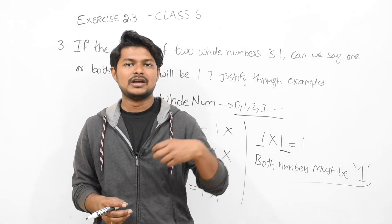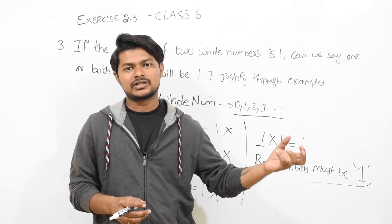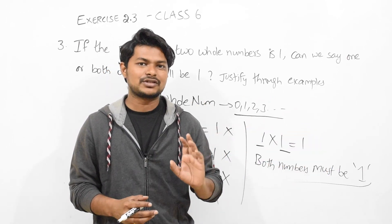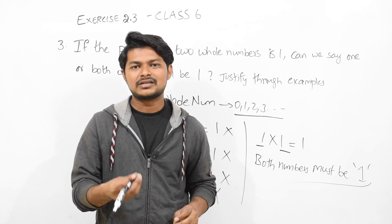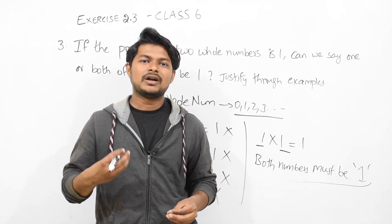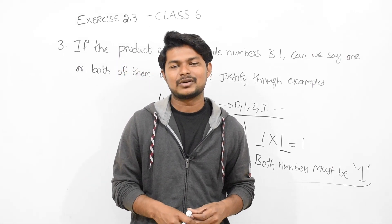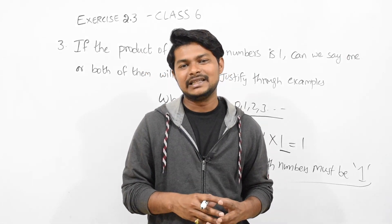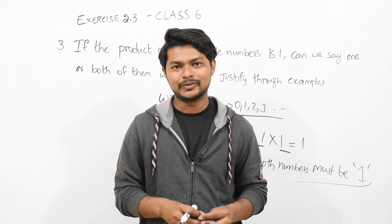In only one case, that is 1 into 1 equal to 1, in this case only it is true, remaining all cases it is false. So if the product of two whole numbers is 1, can we say one or both numbers will be 1? Here answer will be both numbers must be 1, then only this case is valid.